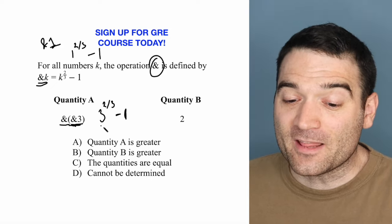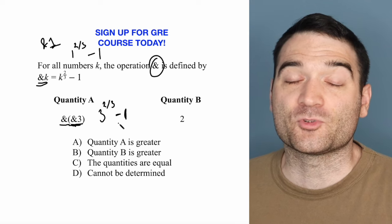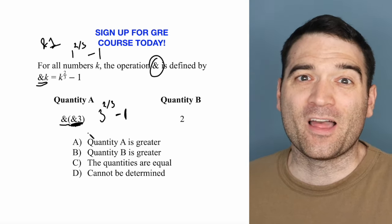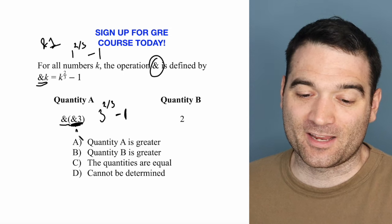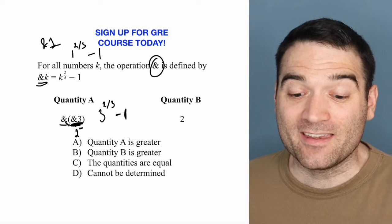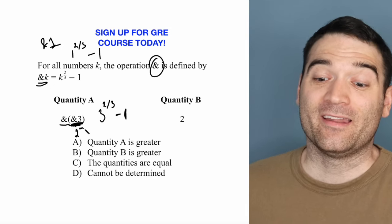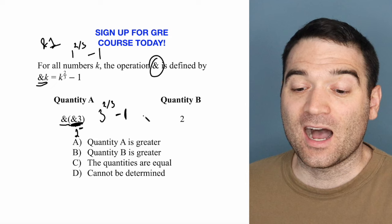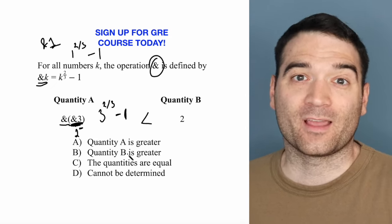And since three to the power of two-thirds is smaller than three, and I'm subtracting one, already this number is smaller than two. So I'm going to say it's less than two already. And then if I take the ampersand again, it's going to get even smaller than that. So I don't actually need to calculate this value. I know that it's smaller than quantity B.